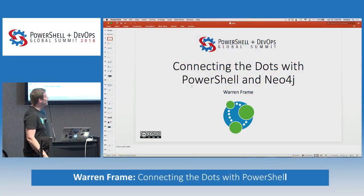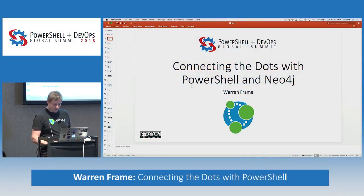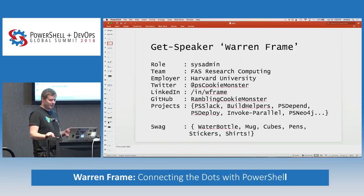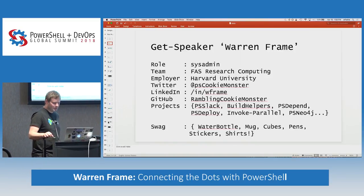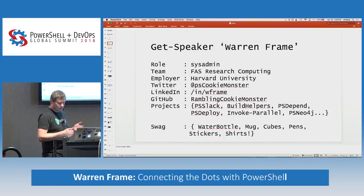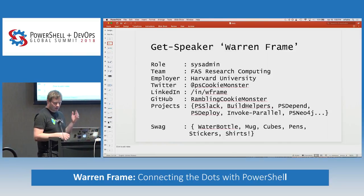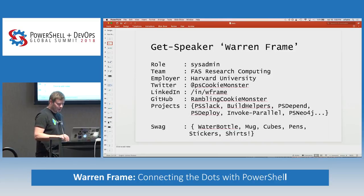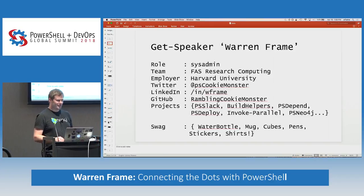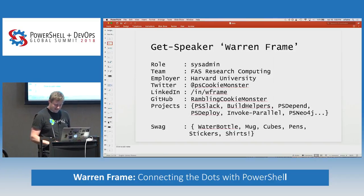Today we're going to be talking about connecting the dots with PowerShell and Neo4j, a graph database. I'm Warren Frame. I'm an infrastructure engineer at Harvard's Research Computing Group. If you're in the PowerShell community, you might have seen or used some of the modules I work with, like PS Slack, PS Deploy, Invoke Parallel. And we have some swag — I'll mention how we can deal with that later.